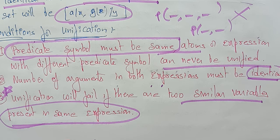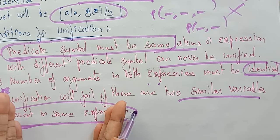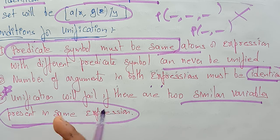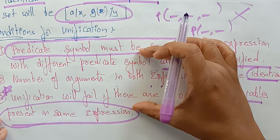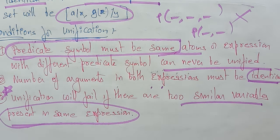So I hope you understand what exactly unification is. In the next video, I will explain examples, the algorithm, and how you are going to implement that algorithm. To summarize: unification means making two expressions equal by substitution, and it is only possible when all the conditions are satisfied.